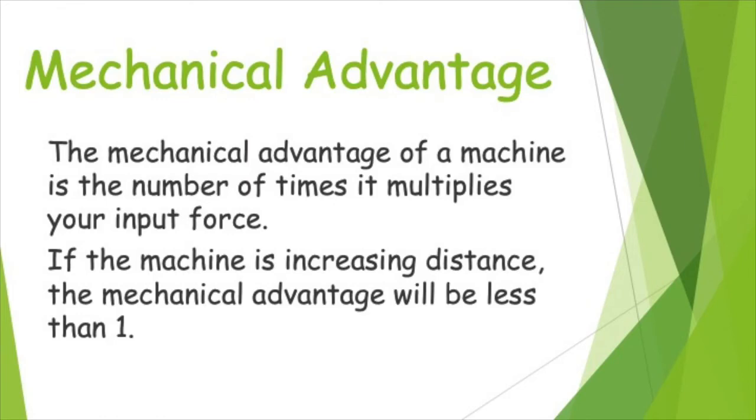So if you're putting 10 newtons of force into a machine, but you're only getting 5 newtons out because it's doing it over a longer distance, then that mechanical advantage would be 0.5 because that would be half. If other machines that increase your force, that mechanical advantage will be greater than one. So let's look at an example of how that works.